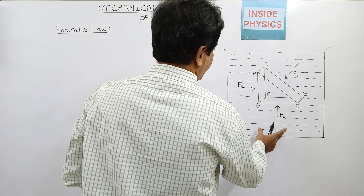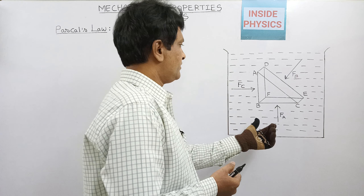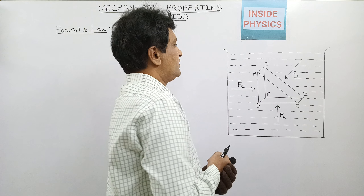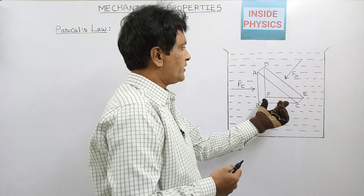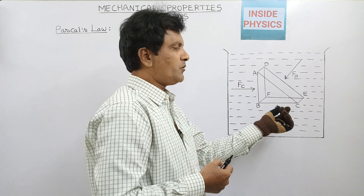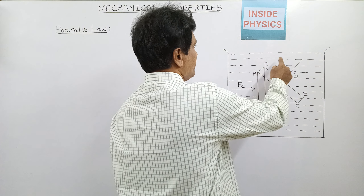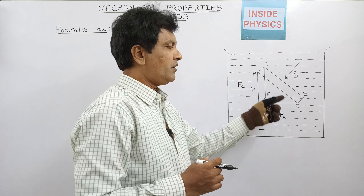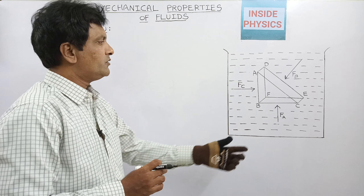Inside a beaker I have taken a fluid. There is a right-angled prism-like object immersed in the fluid. This object is very very small so that all the points of the object are at the same level — that is, the same depth from the surface of the fluid. The diagram looks big because we have enlarged it for better understanding. In this way, gravity also has the same effect on all of its points.